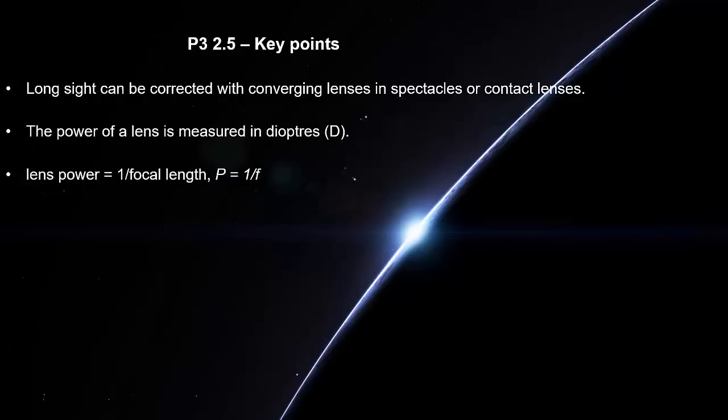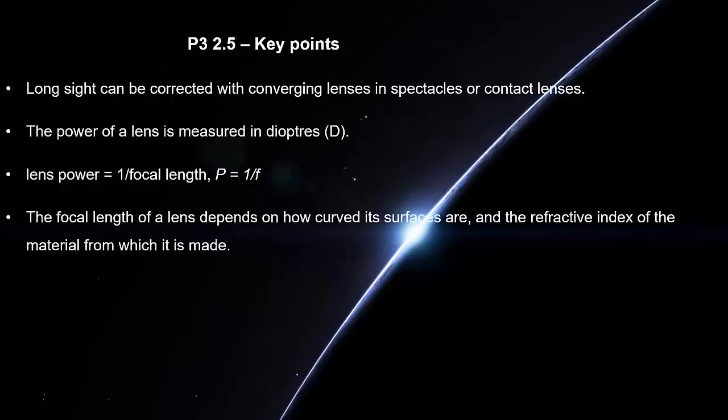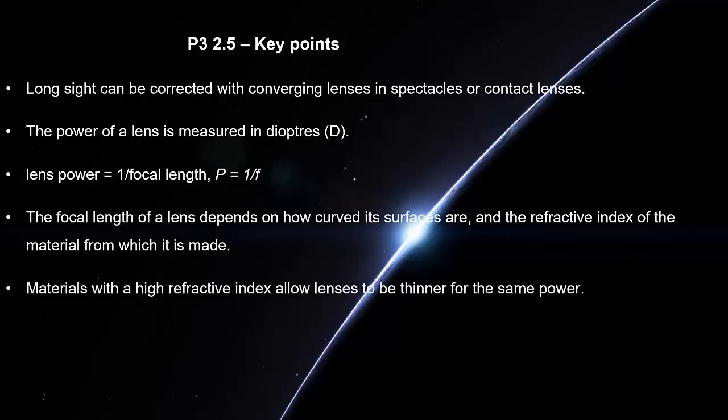Lens power equals 1 over the focal length. The focal length of a lens depends on how curved its surfaces are and the refractive index of the material from which it is made. Materials with a high refractive index allows lenses to be thinner for the same power.